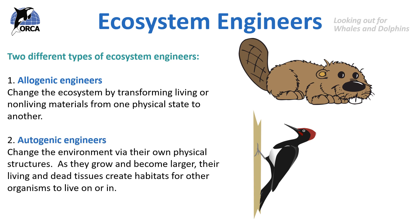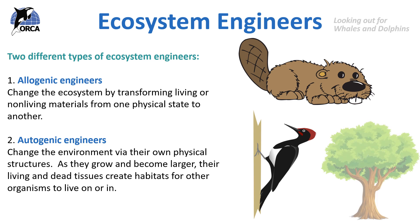Autogenic engineers change the environment via their own physical structures. As they grow and become larger, their living and dead tissues create habitats for other organisms to live on or in. Trees are a really good example, because as they grow, their trunks and branches create habitats for other living things — these may include squirrels, birds or insects, among others. Dead wood from trees is also a really important habitat for lots of different types of insects.